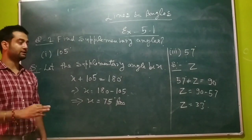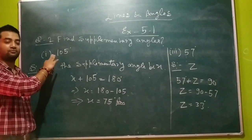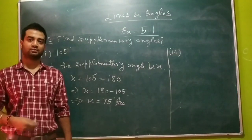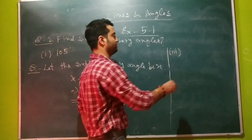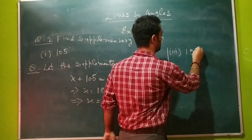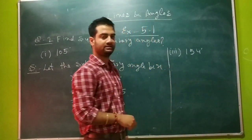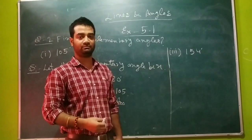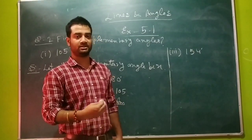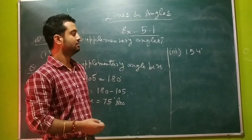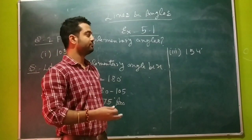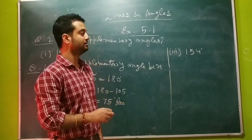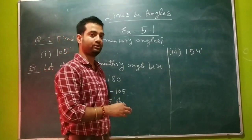And the supplementary angle of 75 degrees is 105 degrees. Now let's move to the next question. In our next question we have to find out the supplementary angle of 154 degrees. Can you tell me what type of angle 154 degrees is? Yes, this is an obtuse angle. So what type of angle will be its supplement? Its supplement will be an acute angle.